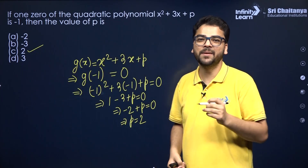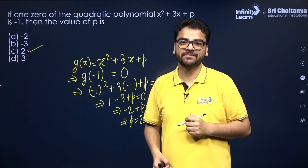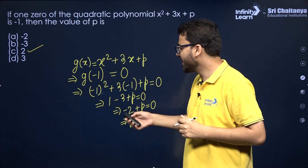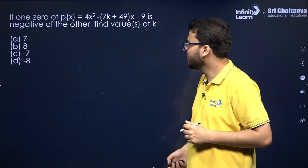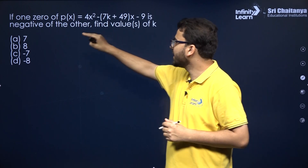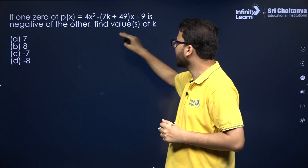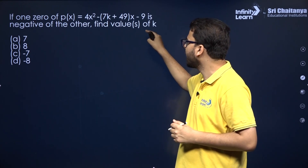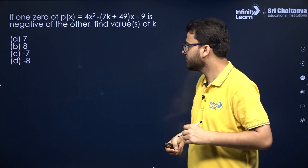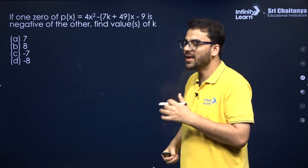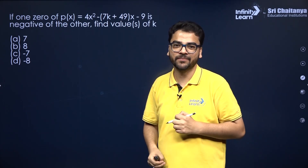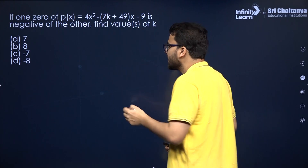I hope that is clear. Let us take the next question. If one zero of this polynomial is the negative of the other, you have to find the value of k.